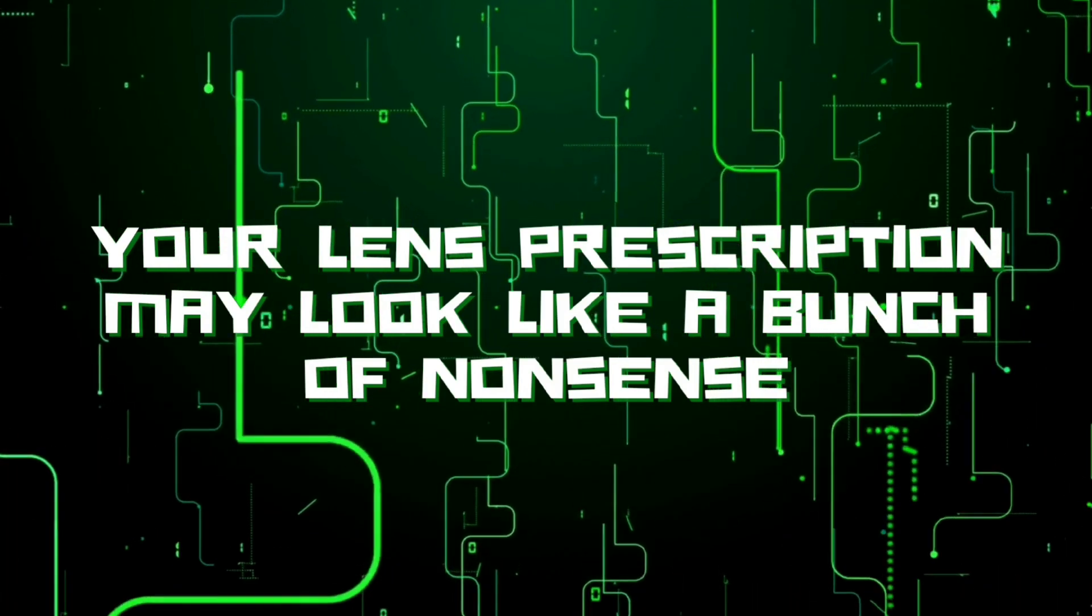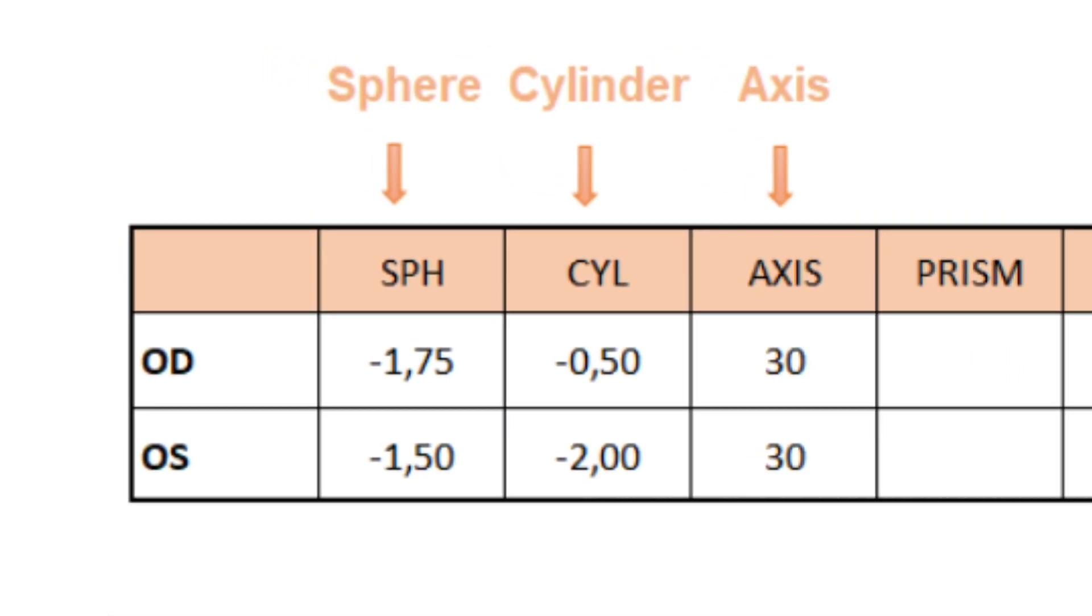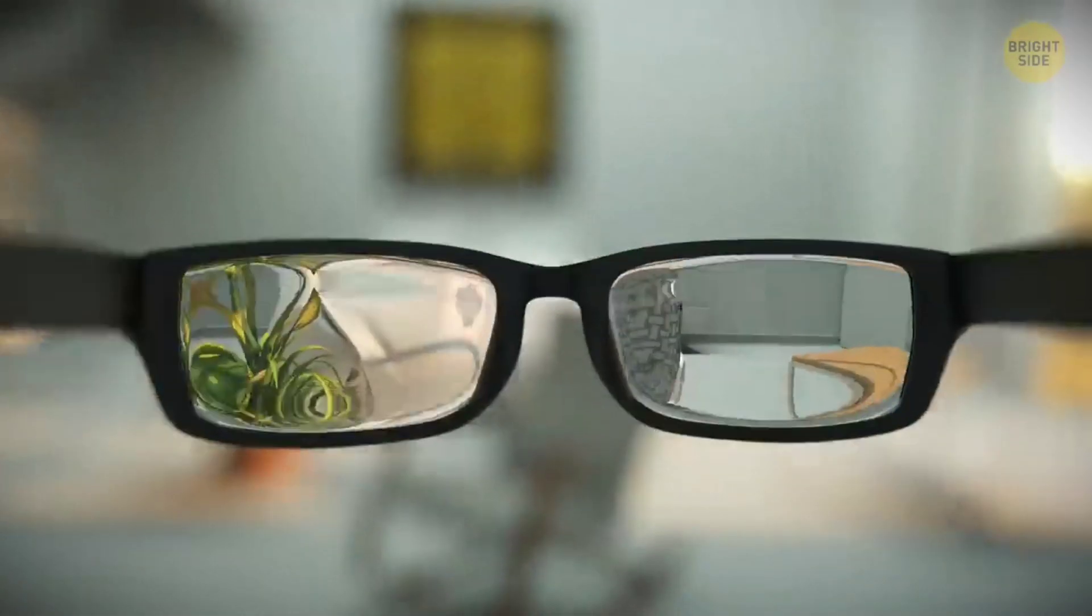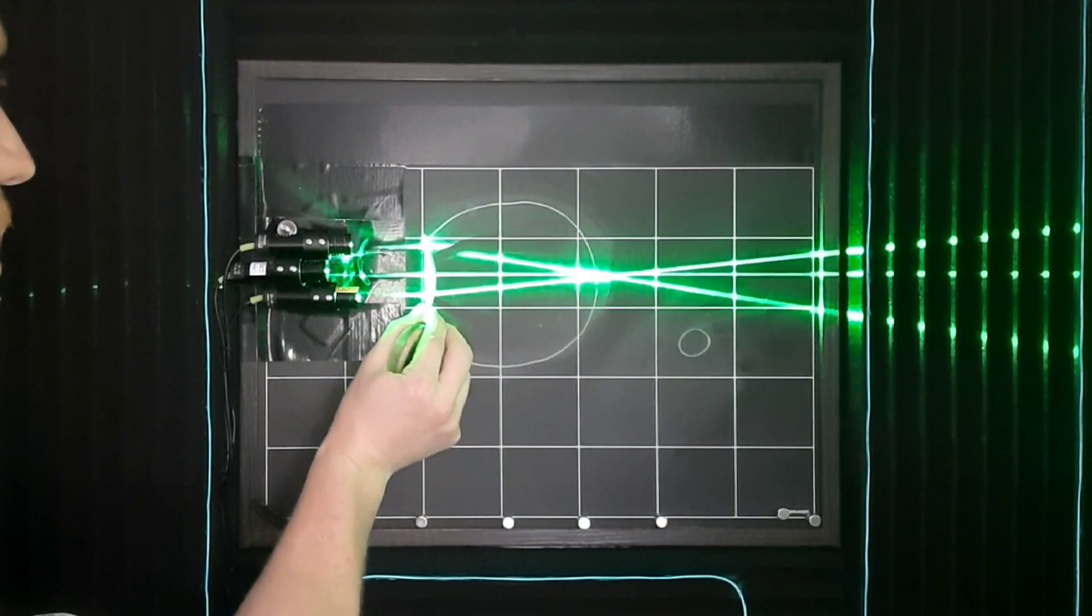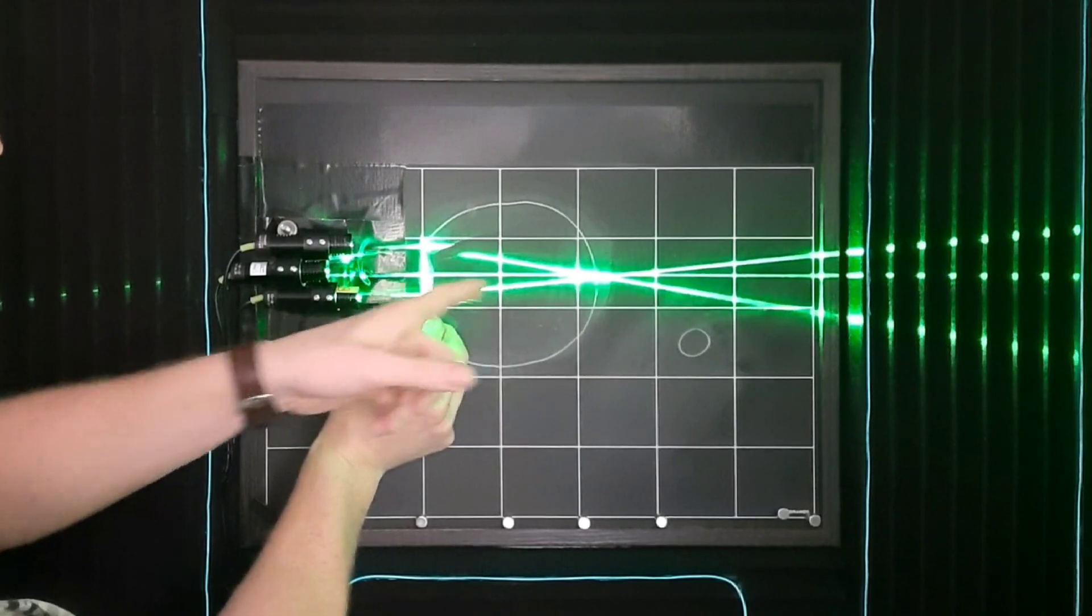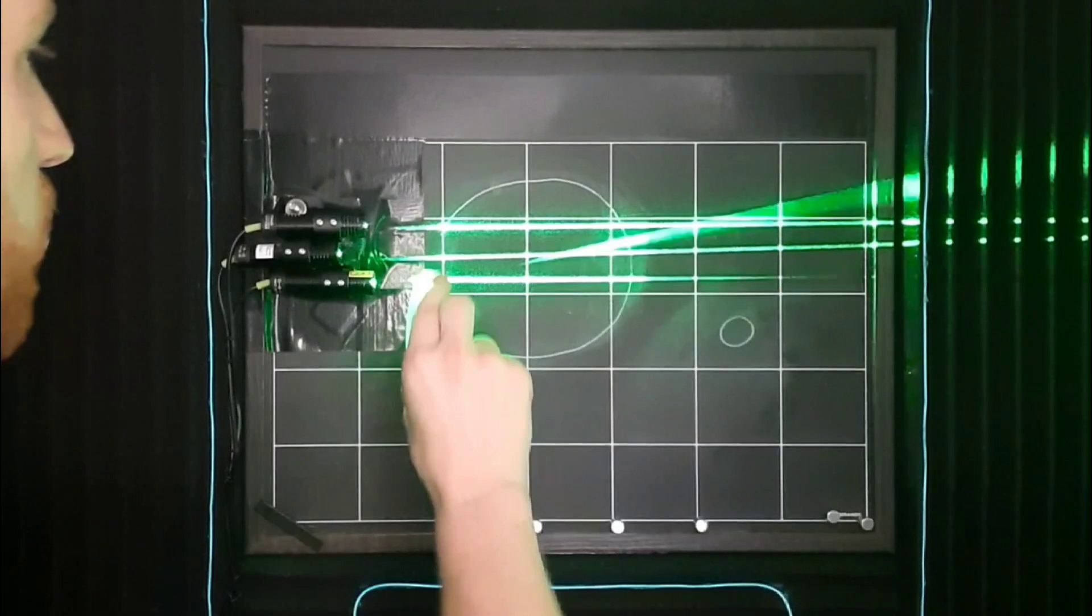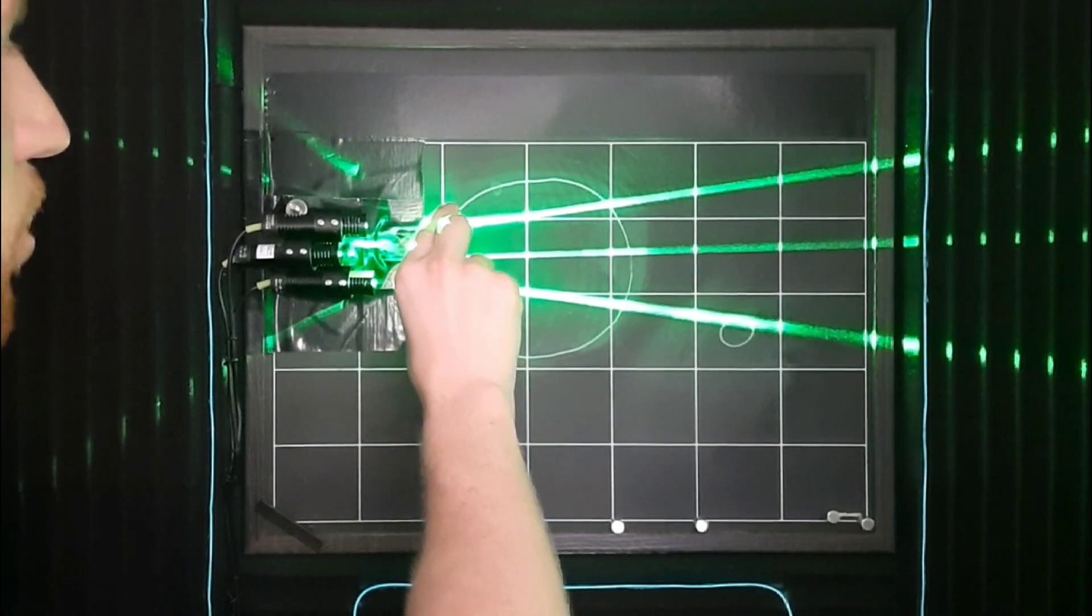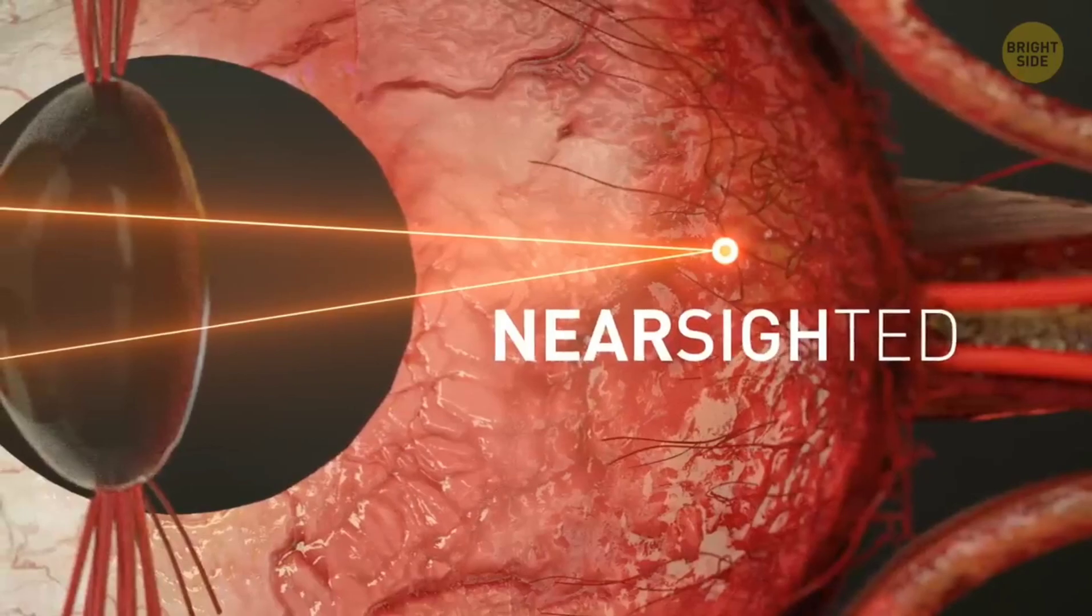Your lens prescription may look like a bunch of nonsense, but here's how you understand it. The first number is probably SPH or spherical. This describes the overall curve and power of your lenses. If it is positive, you have positive or plus lenses that correct for farsightedness, moving up that point of focus. And if you have a negative number there, you have negative lenses or minus lenses that correct for nearsightedness.